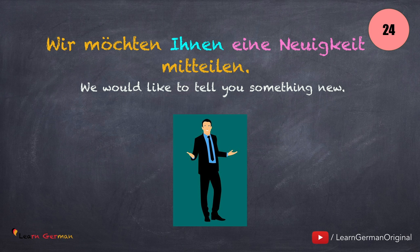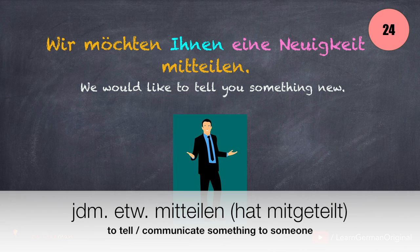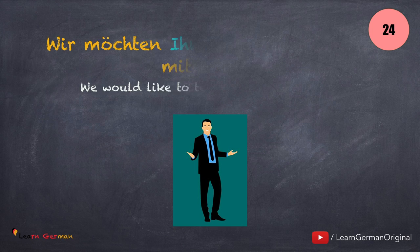Let's look at the next sentence: Wir möchten Ihnen eine Neuigkeit mitteilen. Jemandem etwas mitteilen. Also a trennbares Verb.